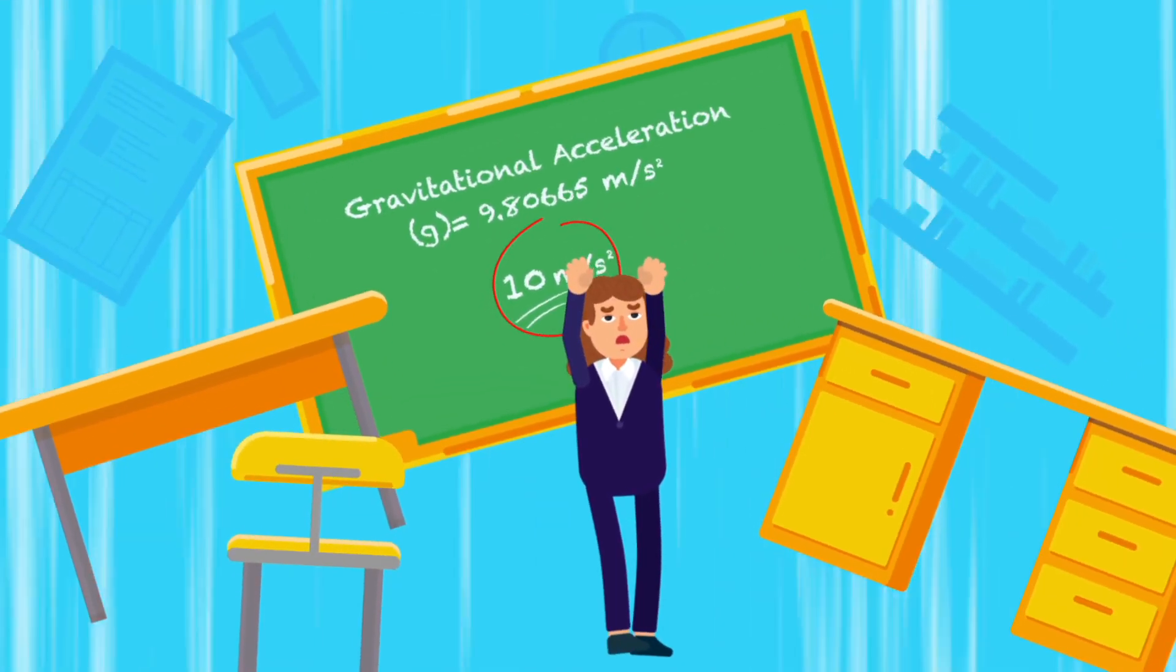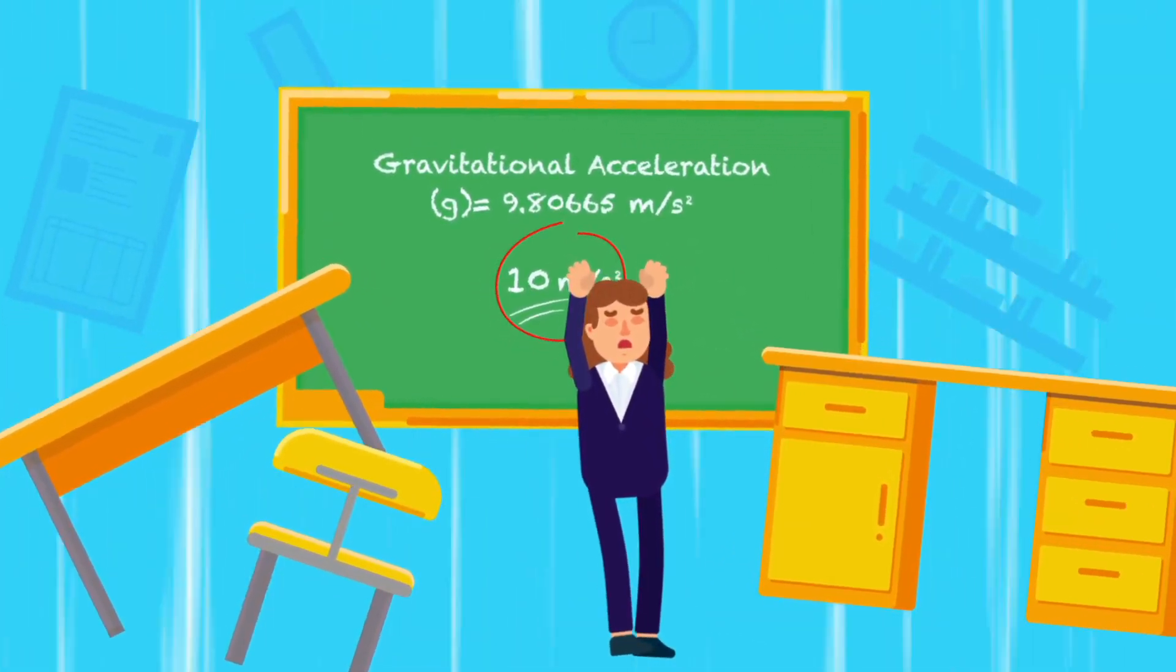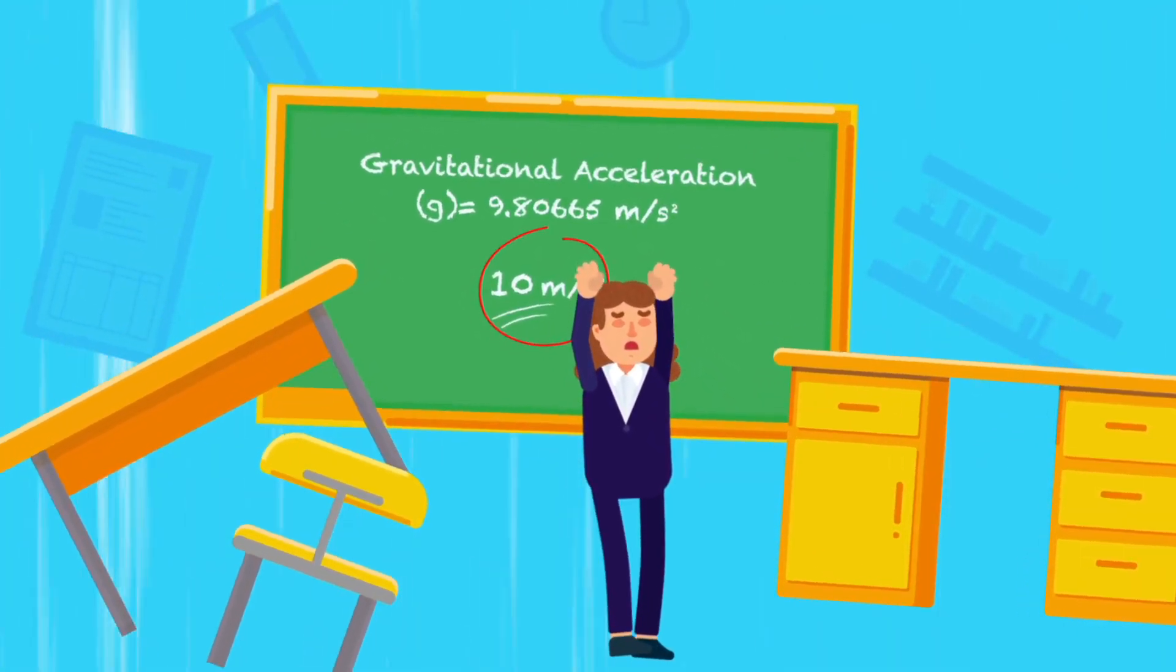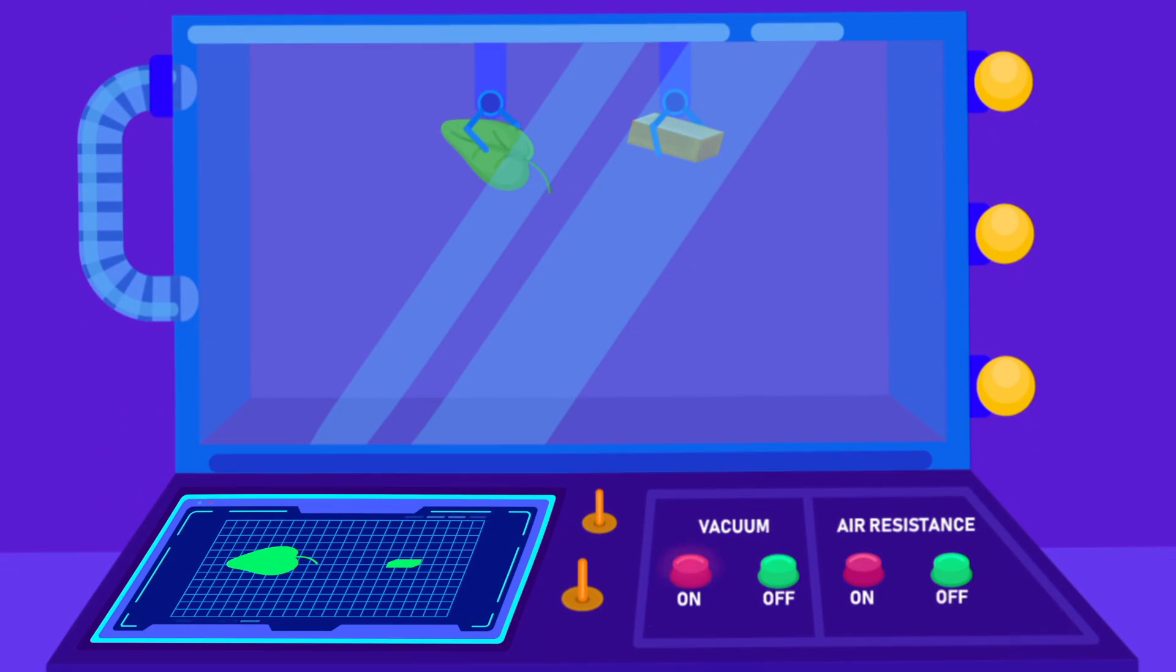The gravitational acceleration is the same for all objects, irrespective of its size or mass. In a vacuum where there is no air, the acceleration takes a full effect, resulting in objects experiencing a freefall.